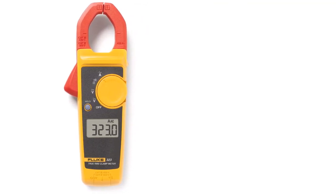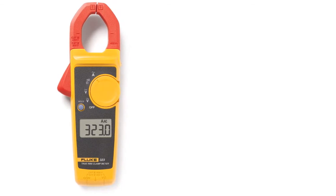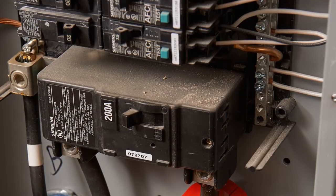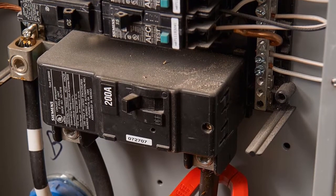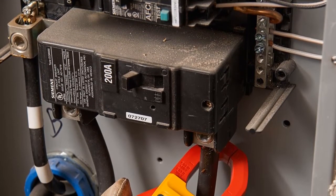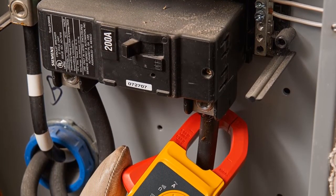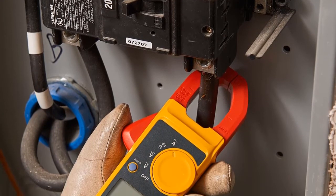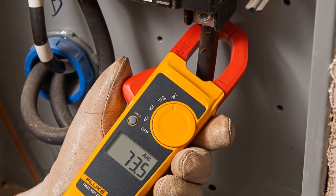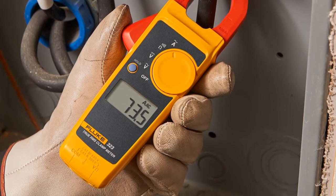The Fluke 323 model is ideally suited for current measurements up to 400A in tight cable compartments. True RMS measurements and optimized ergonomics make the Fluke 323 one of the best general troubleshooting tools for commercial and residential electricians.